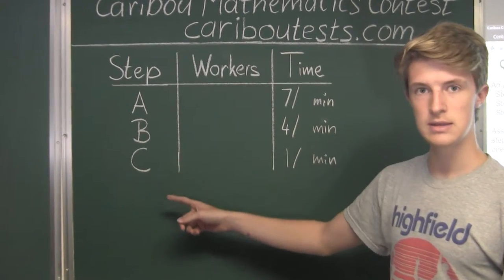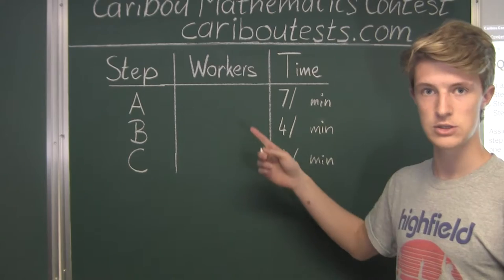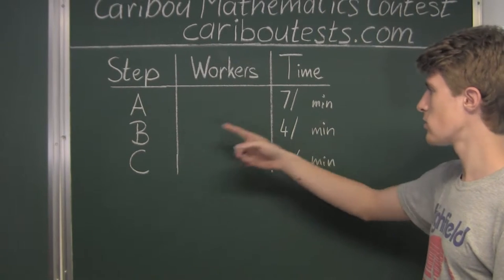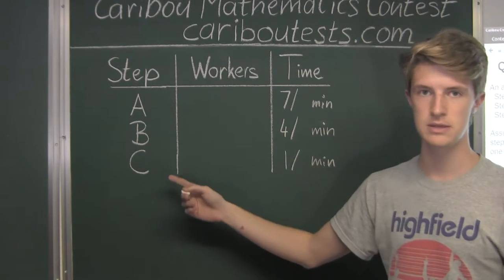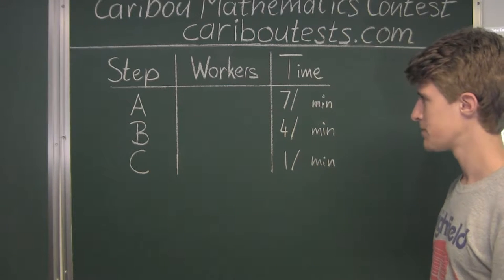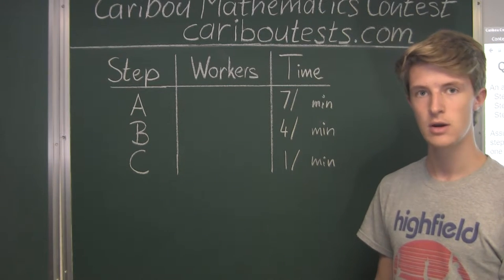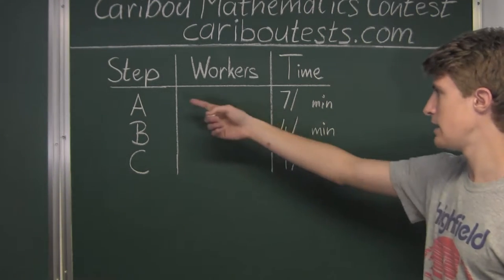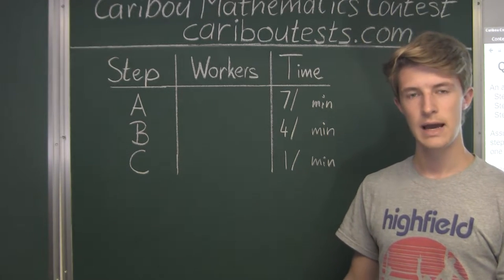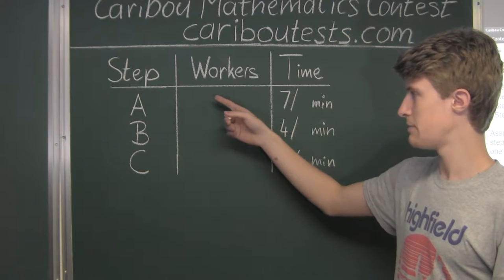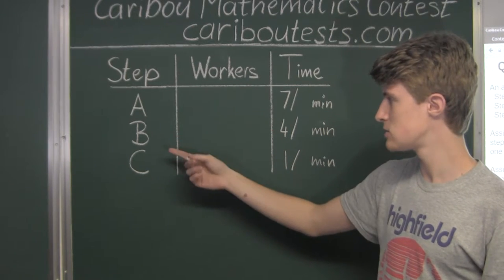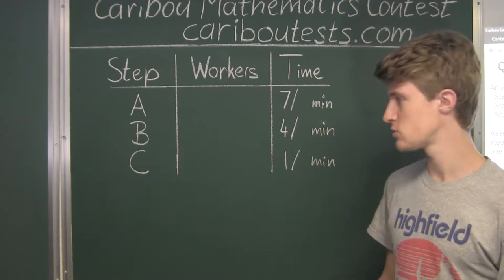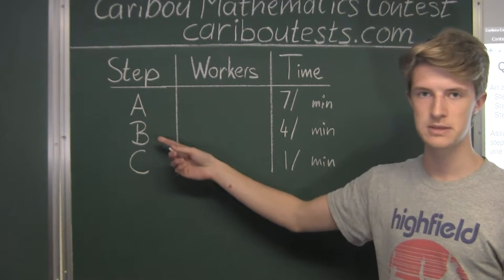Looking at steps A, B, and C: if we were to have one worker for each step, step A takes the most time at 7 minutes, step B takes 4 minutes, and step C takes 1 minute. Naturally, we would want to distribute more workers to step A than step B, and more workers to step B than step C, since A takes the longest. If we were to have only one worker for step A, we would then have at least two workers for either step B or step C, and that wouldn't make sense because we'd be distributing more workers to steps that take less time.